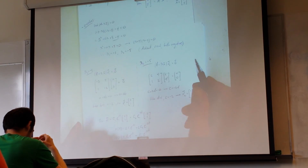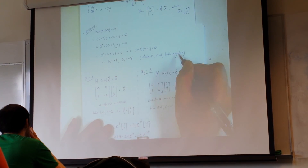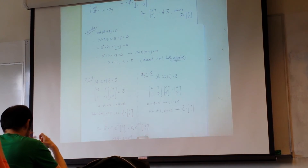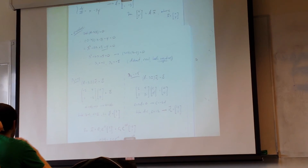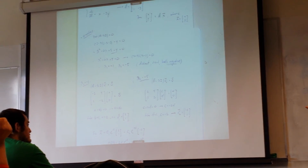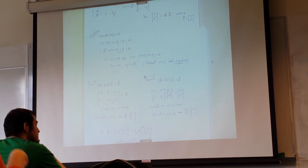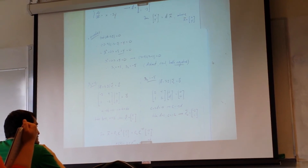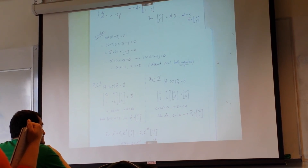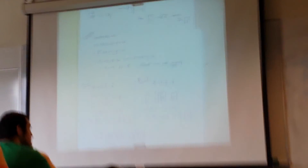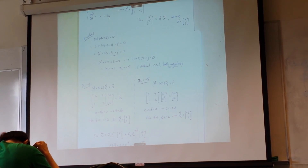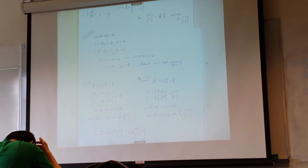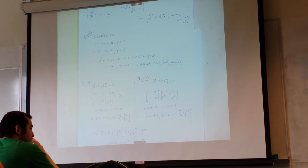If the eigenvalues were both positive but distinct, it would be a node but a source. The sign of the eigenvalues determines stability. If they have opposite signs, something different happens — that's the saddle point case. A student asks: is there a case where eigenvalues are complex? Yes, and we're covering that today. Good observations all around.